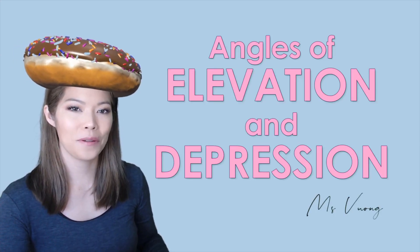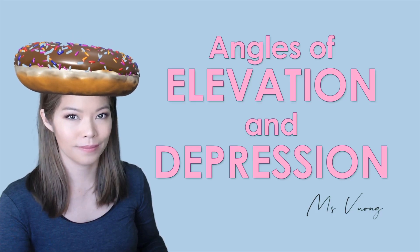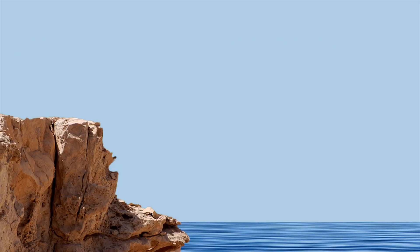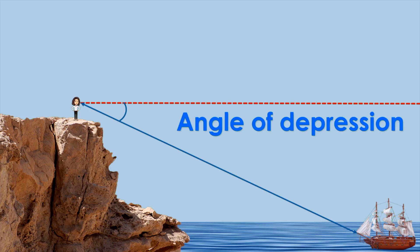Hi, I'm Miss Voom and today we're going to look at angles of elevation and depression. Let's say I'm standing on top of a cliff and I'm looking at a ship that's far away. Now my line of vision with the horizontal line creates an angle of depression, whereas if I'm looking at something like an aeroplane above the horizontal line, then this line forms an angle of elevation.